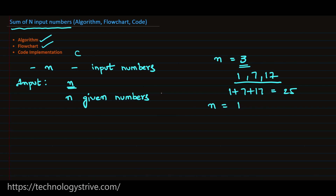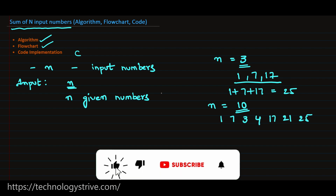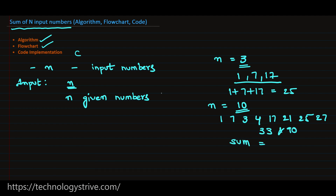For example, if n equals 10, we need to provide 10 input numbers and the sum of these numbers equals 228. Before writing the algorithm, we need to know the input — first we give n, and according to n we give the numbers. The output is the sum of these n given numbers.